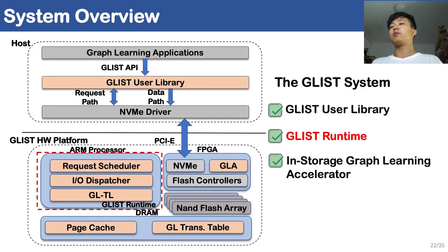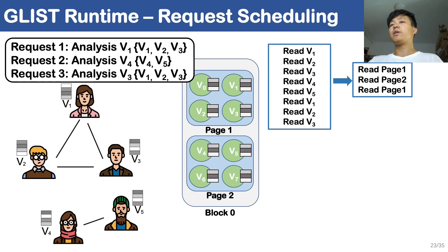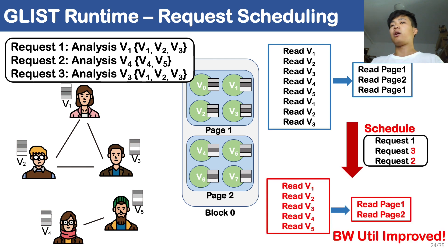Next, I will talk about the GLIST runtime, which mainly schedules the incoming user requests to exploit temporal data locality. To exploit temporal data locality, in a non-optimized scheme as shown in the figure, serving user requests sequentially results in waste of flash bandwidth. As we can see, request1 and request3 access the same flash page. However, if we reorder request2 and request3, the redundant access can be eliminated.